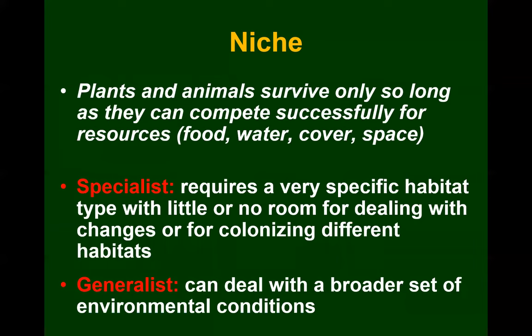Plants and animals survive so long as they can compete successfully for food, water, cover, and space. When we talk about niches, there are specialist niches — creatures that require very specific habitat types with little room for dealing with change or colonizing different habitats. A specialist needs a very specific habitat, versus a generalist that can deal with a broader set of environmental conditions. Think about white-tailed deer — they can be just about anywhere.